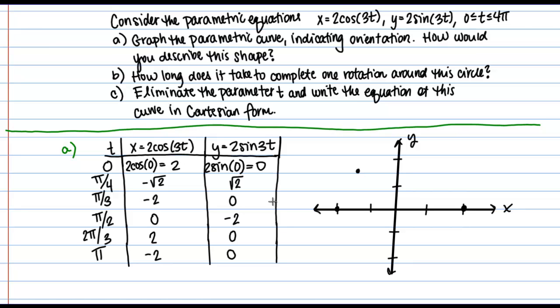And then at the point π over 2, I'm at the point 0, negative 2, so here. And then at 2π over 3, it looks like I'm back at the point 2, 0. Alright, so I'm back at this point that I passed through before. And then at time π, I'm at the point negative 2, 0. So now I'm back here at this point.